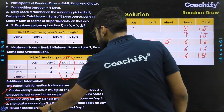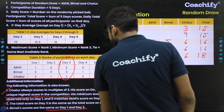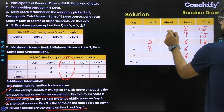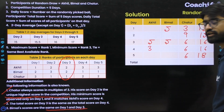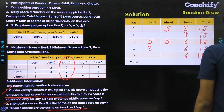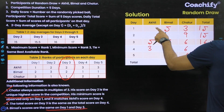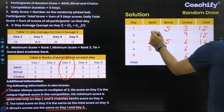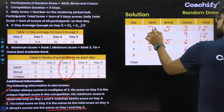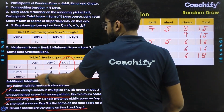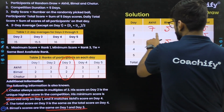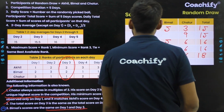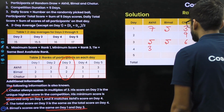From the additional information, Bimal's scores are the same on day 1 and day 3. Since Bimal scores 5 on day 3, he also scores 5 on day 1. For day 1, the total is 15 and Chatur scores 3, Bimal scores 5, so the remaining value for Akhil is 7. Checking ranks: Akhil rank 1, Bimal rank 2, Chatur rank 3 — consistent with scores 7, 5, 3.